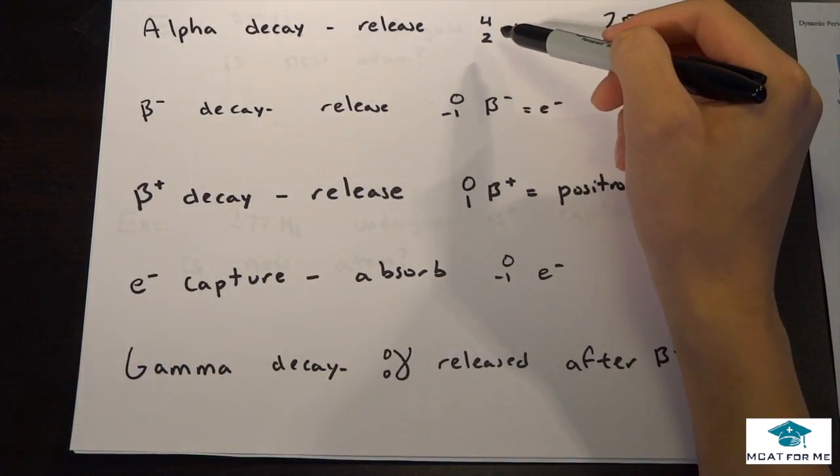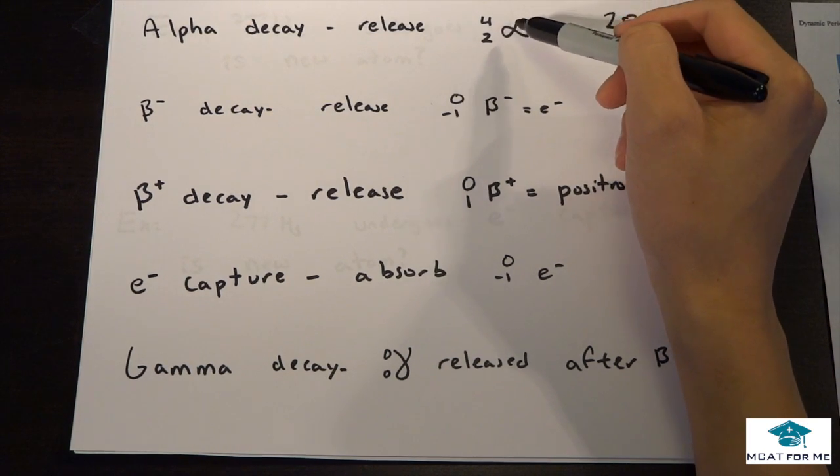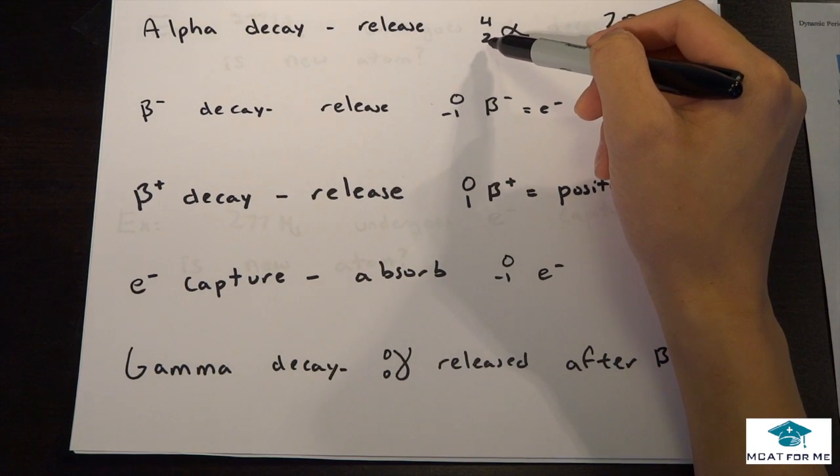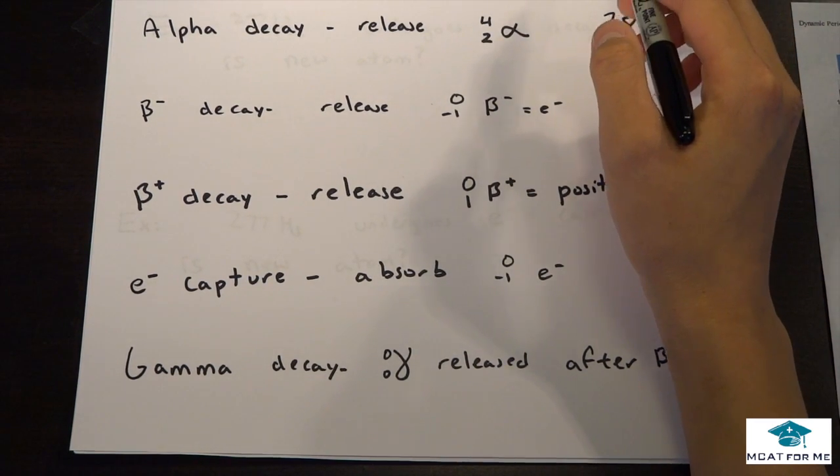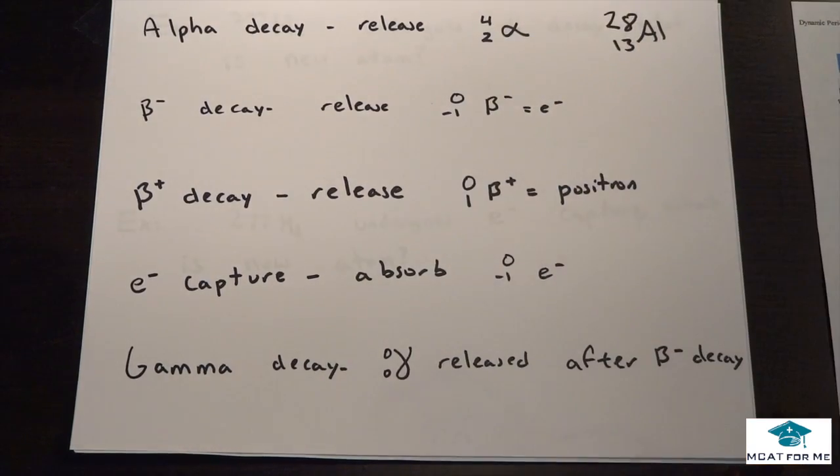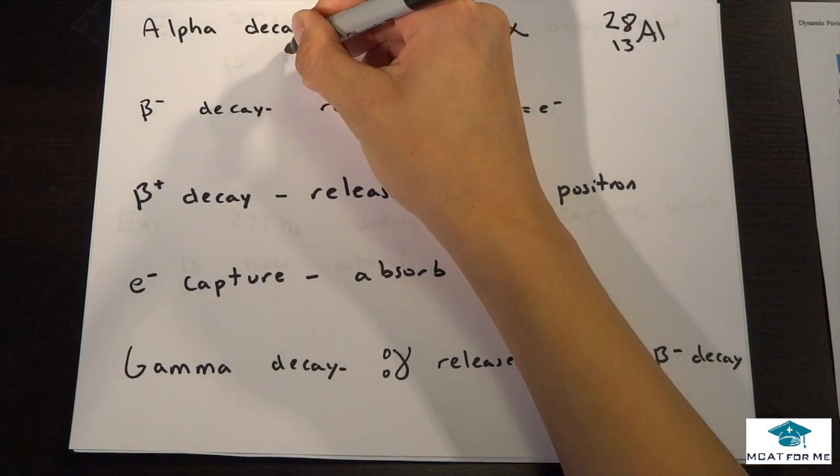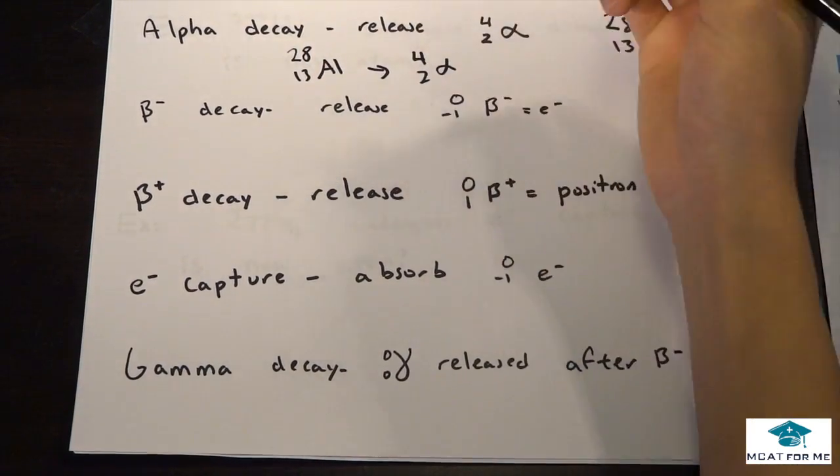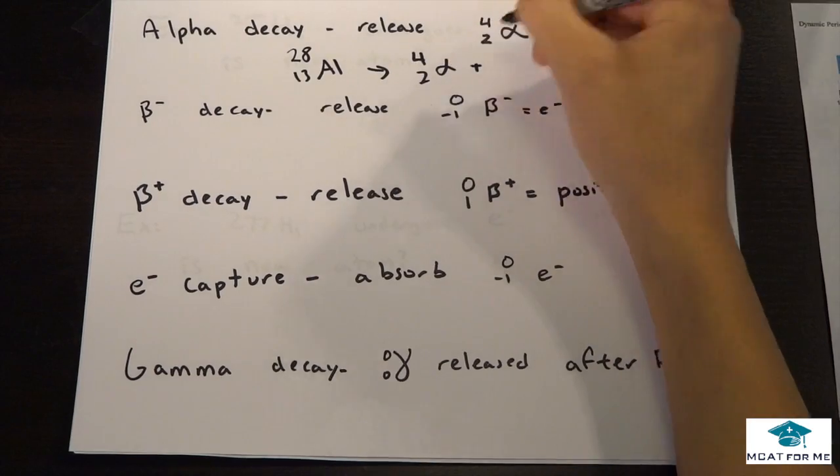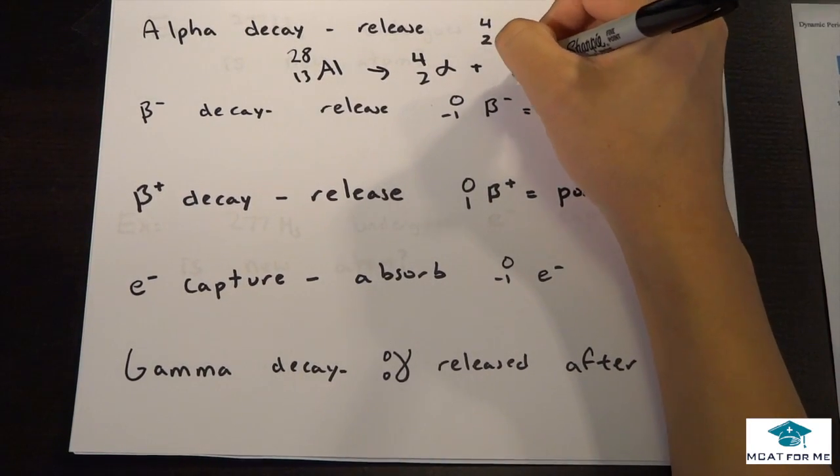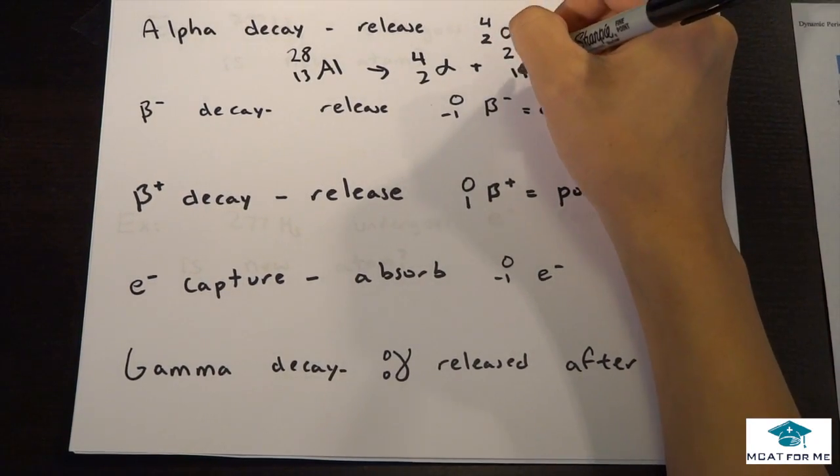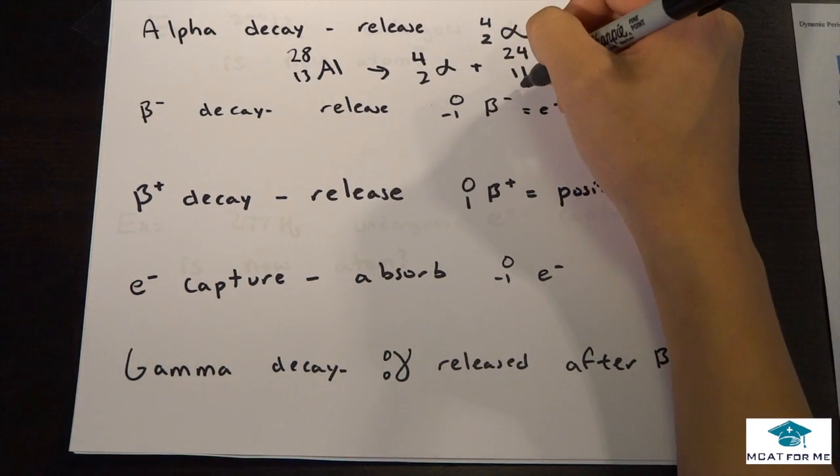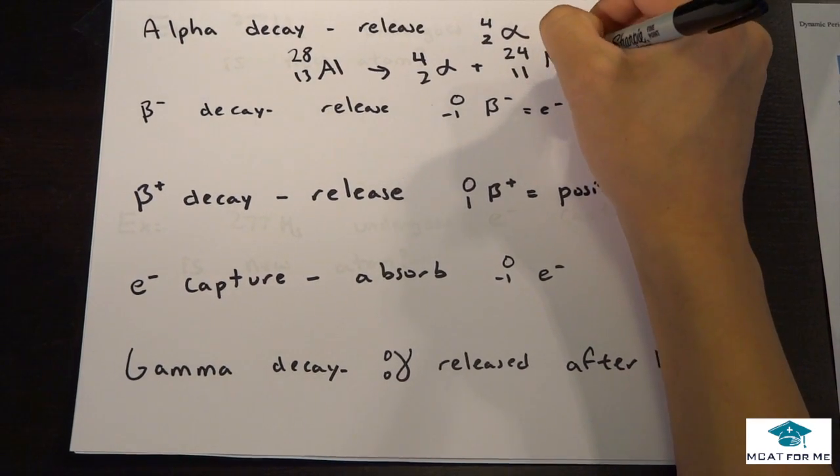So alpha decay, we release 4 over 2 alpha, so this is an alpha particle which has a mass number of 4 and it has a proton number of 2. So how many neutrons would it have? Well it would have 2 because 4 minus 2 gives you 2. So if we start with 28, 13 aluminum, we're going to release this alpha particle. And so what would we get from this? We get 24 and 11. And 24 and 11, remember proton number defines what an atom is. It's no longer an aluminum atom, it's now a sodium.